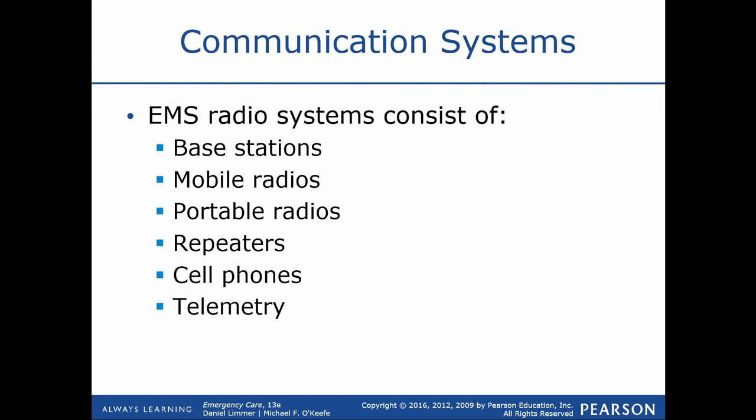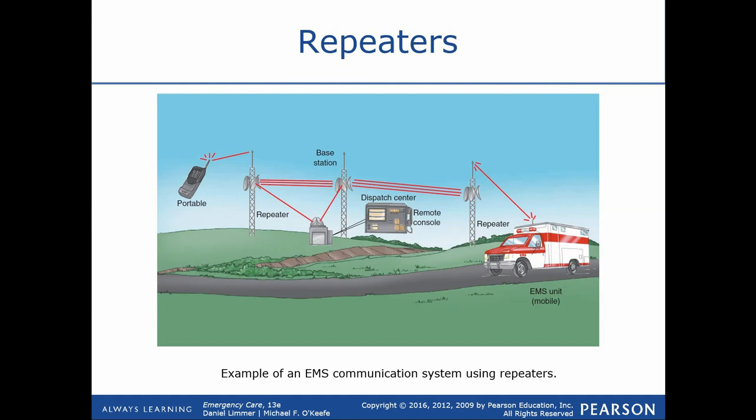Looking at the radio system that allows us to communicate between dispatch and ourselves, there are base stations, mobile radios, portable radios, repeaters, cell phones, and telemetry. Mobile units are actually attached to a vehicle. A portable radio is one I would carry in my hand or pocket, while a mobile radio is attached to a vehicle. The main difference is power supply — a small battery in a handheld radio doesn't transmit as far or as strong as a mobile radio working off the vehicle's auxiliary power.